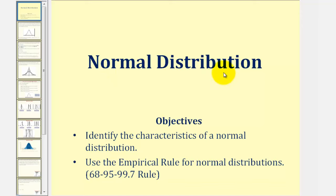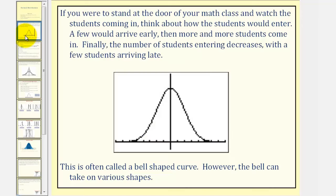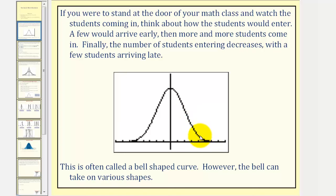Welcome to a lesson on the normal distribution. If you were to stand at the door of your math class and watch the students coming in, think about how the students would enter. A few would arrive early, then more and more students come in. Finally, the number of students entering decreases, with a few students arriving late. So the distribution of the number of students arriving might take on this shape here, which is called a bell-shaped curve.